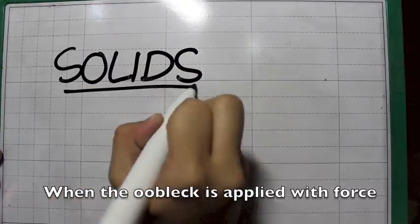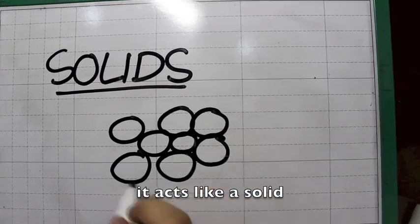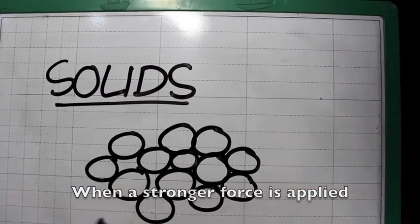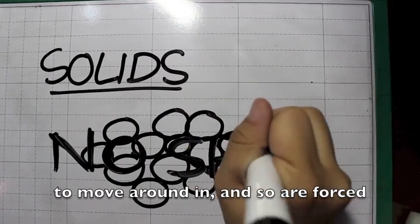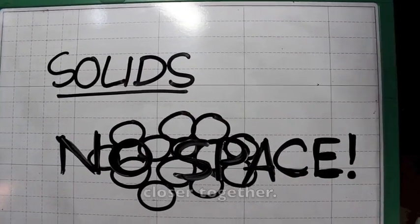When the OOBLEC is applied with force, it acts like a solid. When a stronger force is applied, the particles don't have as much space to move around in, and so are forced closer together.